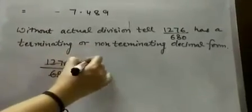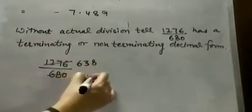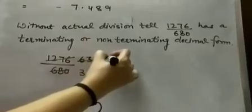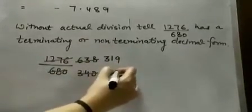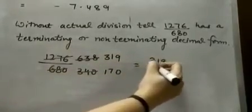2, 6 are 12, 3 are 6, 8 are 16, 40. Again, both the numbers are divisible by 2, 319, 170. Now, this rational number is in the standard form.